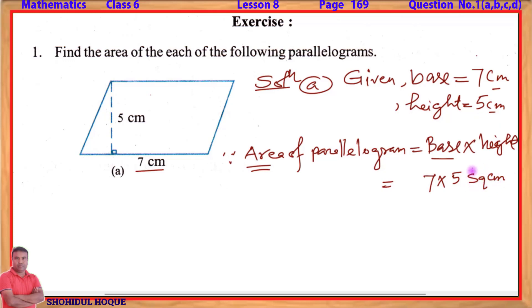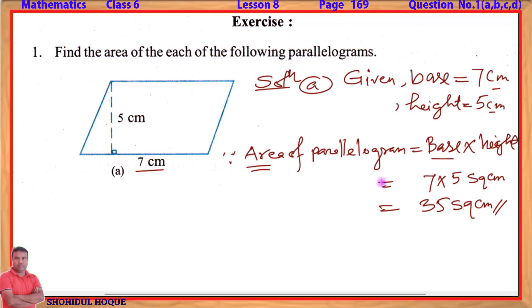7 multiplied by 5 equals 35. So the area is 35 square centimeters. That is the answer for part A — the area of the parallelogram is 35 sq cm.